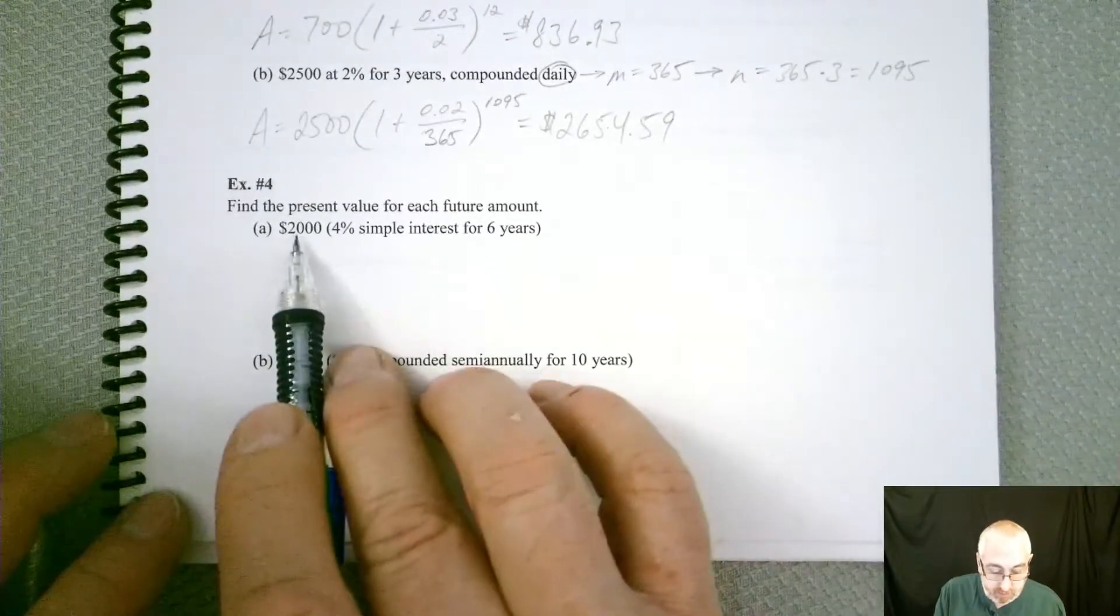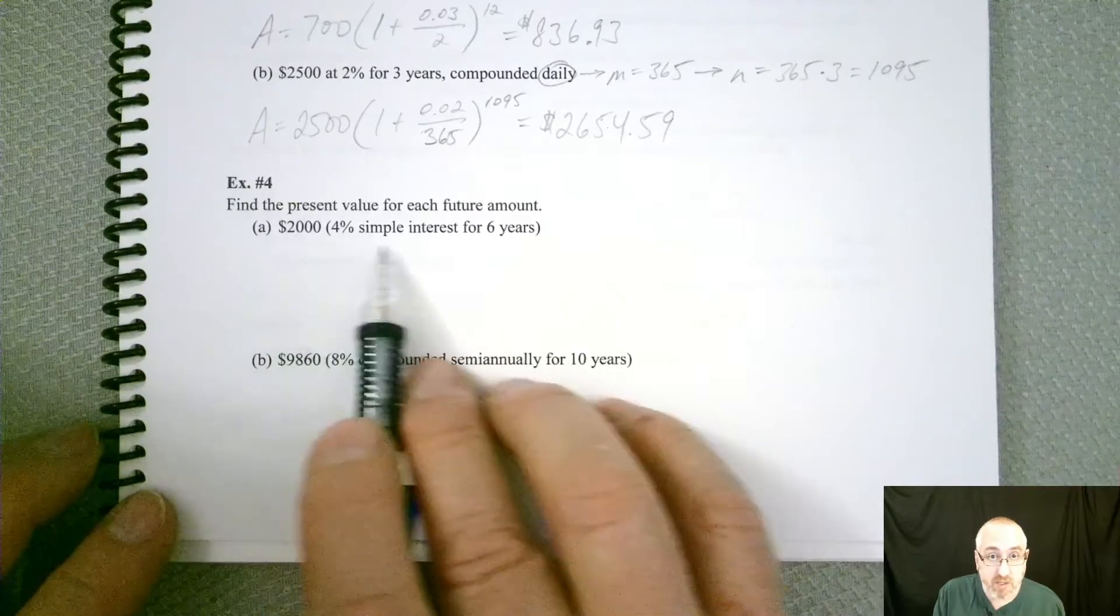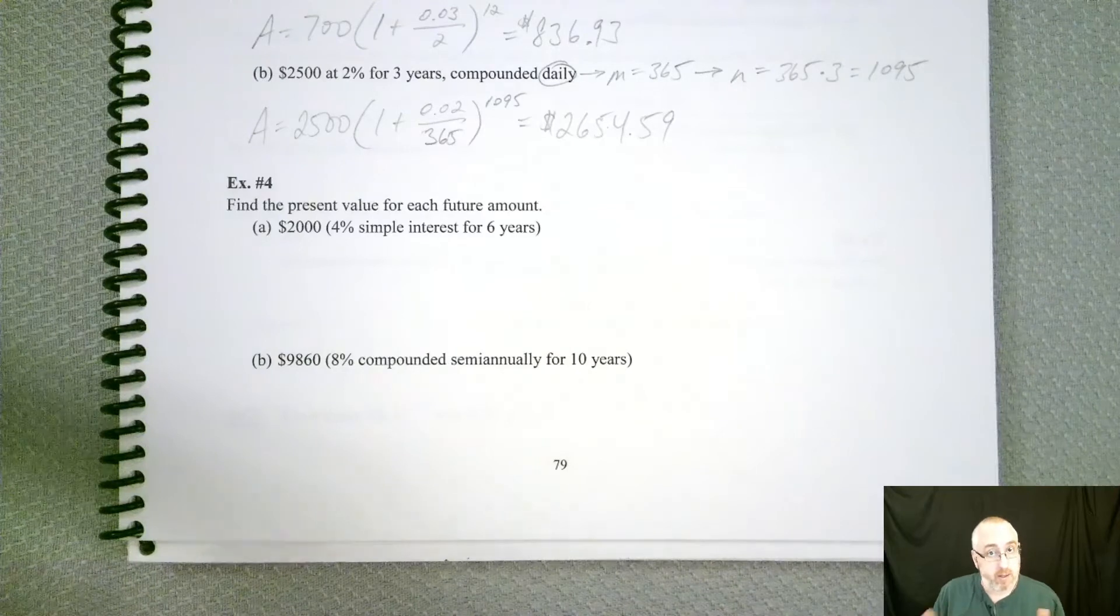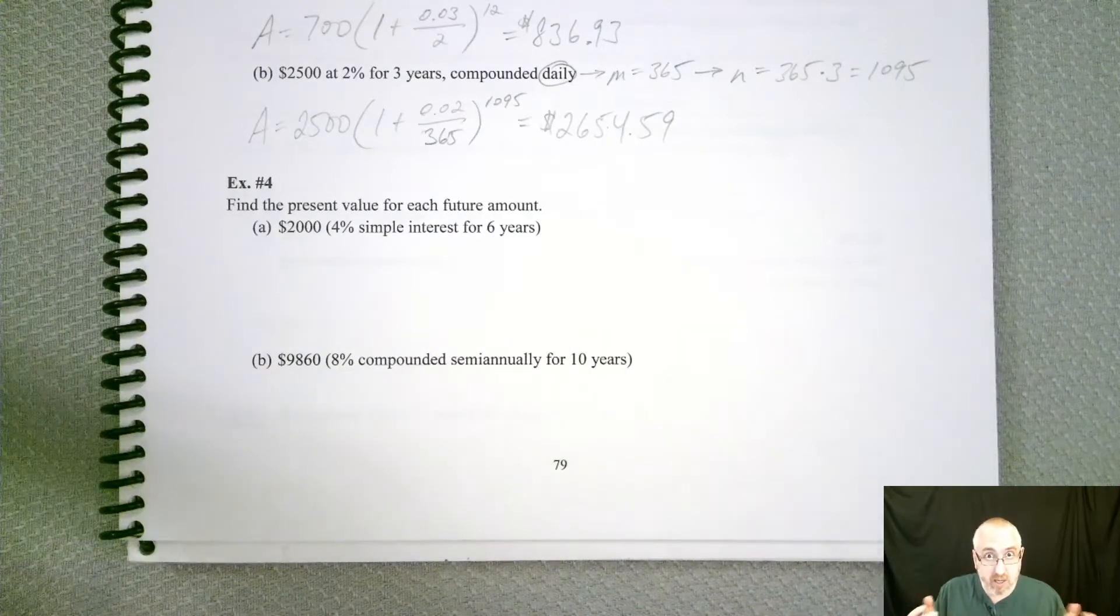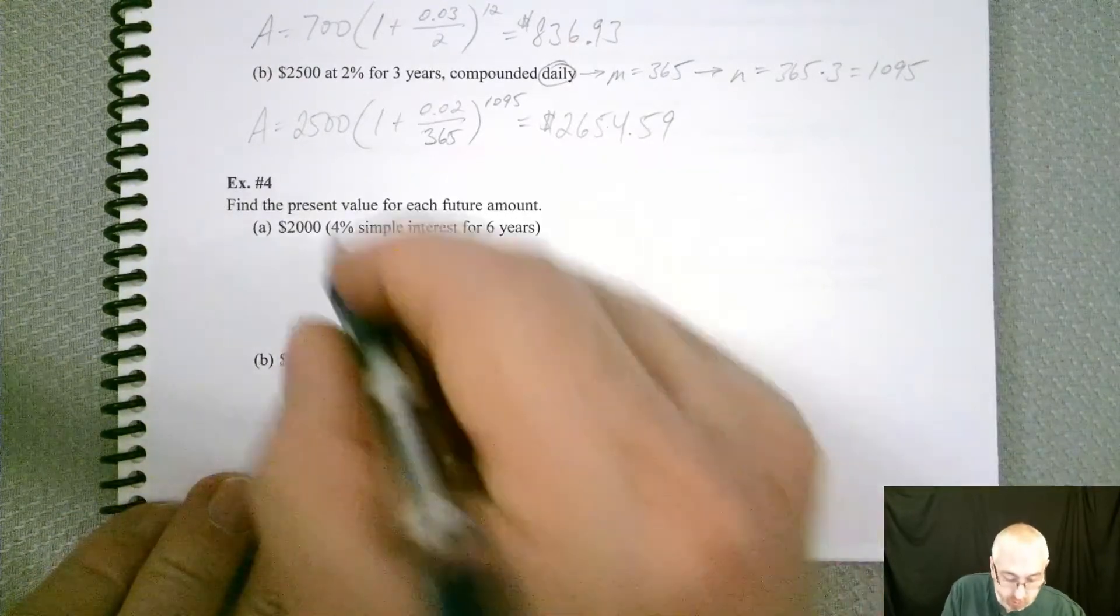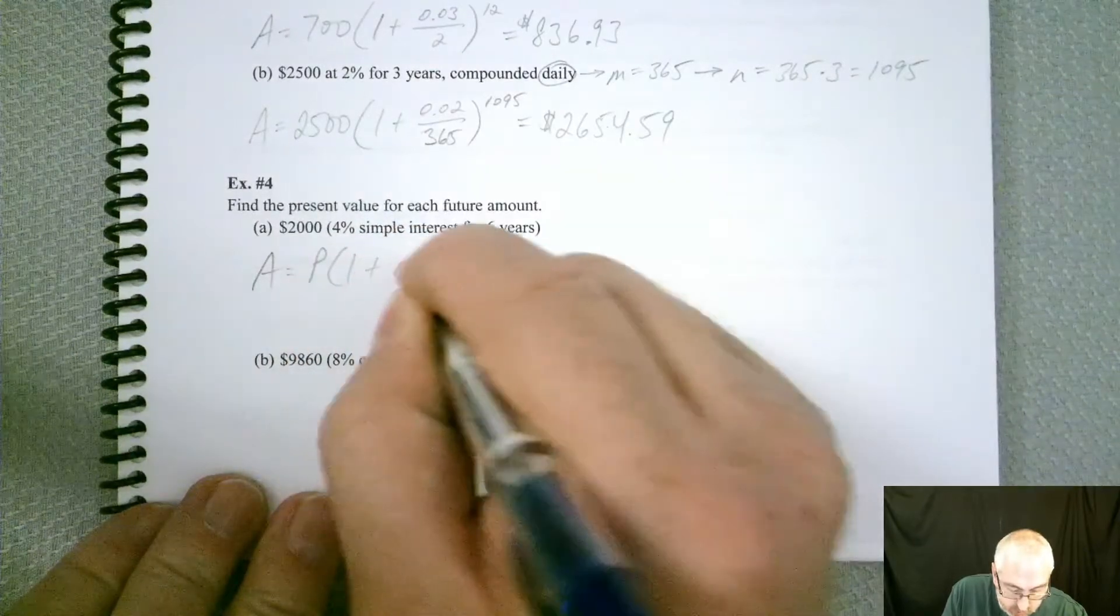So they're saying the future value is $2,000, we have 4% simple interest and it's for six years. So what would we do? Now we're still linking together the future and the present, so we still need that formula, but be careful. This one wants the simple interest one. So we want A equals P times one plus RT.